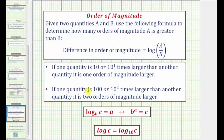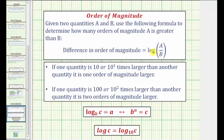If one quantity is a hundred times, or ten to the second times larger than another, it is two orders of magnitude larger. Notice how the order of magnitude is equal to the exponent on ten, which is the reason why the difference in order of magnitude is equal to a common log. Remember, logarithms are exponents.